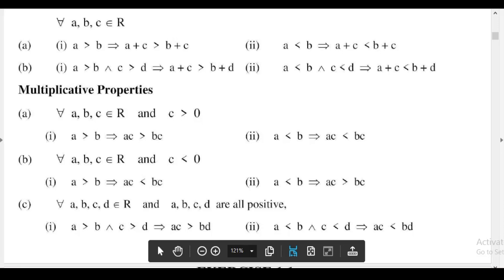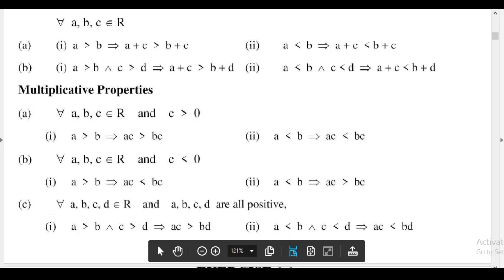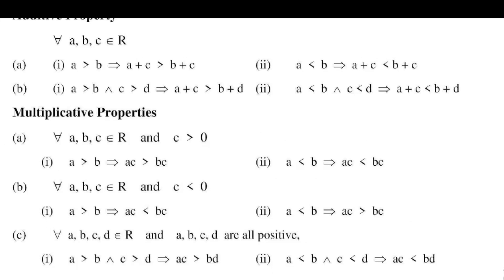Part c: for all a, b, c, d belonging to real numbers and a, b, c, d are all positive — first, a greater than b and c greater than d implies that ac is greater than bd; second, a less than b and c less than d implies that ac is less than bd.